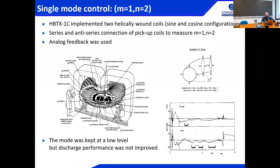The proof was that the RWM can be controlled in feedback — good news. The bad news was that it was practically very difficult to implement different coils with different helicities for different modes that may change. As Prager notes in his book, it was known that in theory it could be done, but in practice many people were skeptical about the possibility of performing this kind of stabilization.